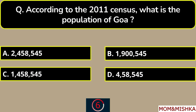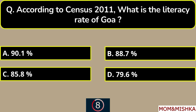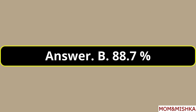According to the 2011 census, what is the population of Goa? Goa is the 4th smallest state by population. According to census 2011, what is the literacy rate of Goa? It's 88.7%, option B.